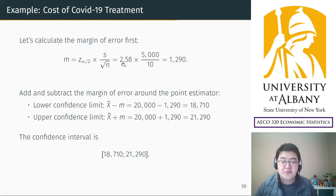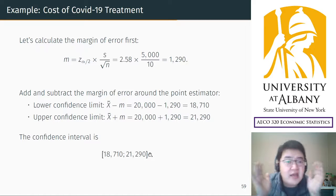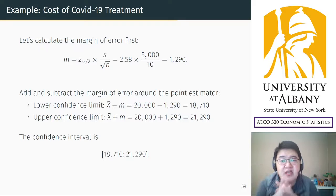The margin of error is 2.58, the z value, times standard deviation 5,000, divided by square root of n, 10, and you get 1,290. You add and subtract this margin around the point estimator. The point estimator is the sample average, which is 20,000. The confidence interval is from $18,710 to $21,290. That's the estimated interval for the mean of COVID-19 treatment cost.